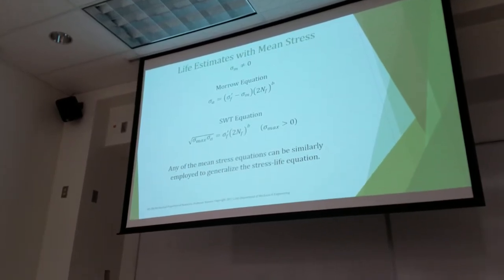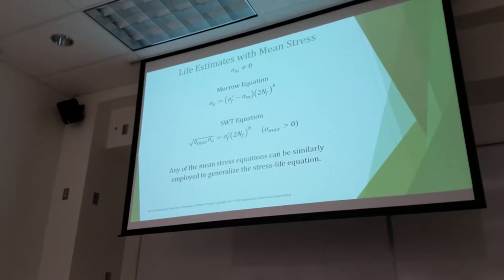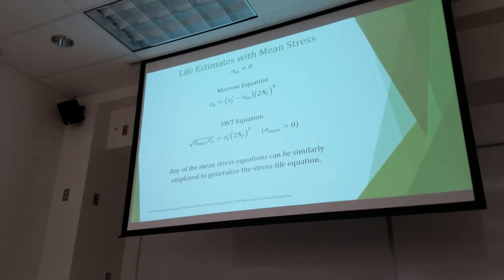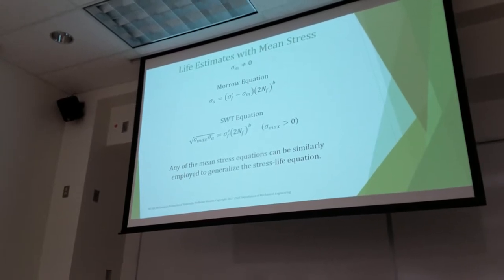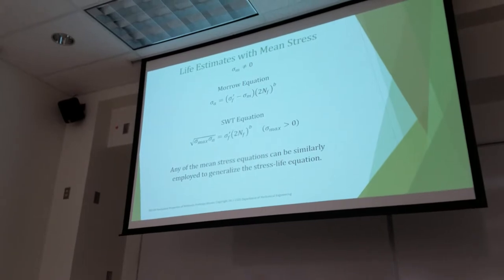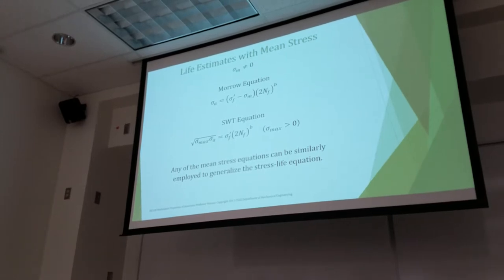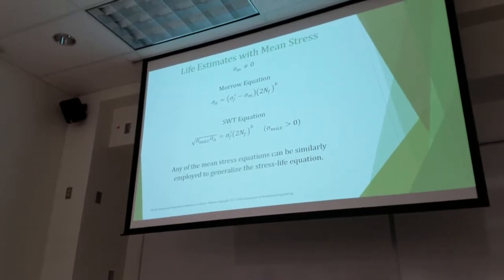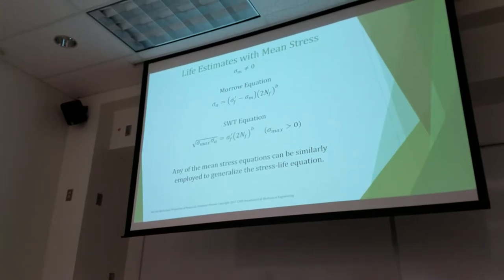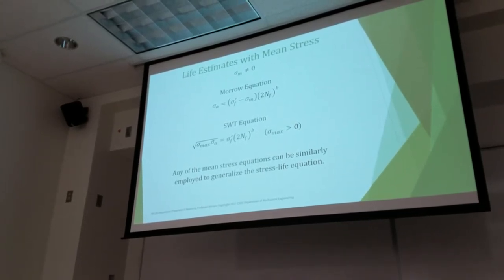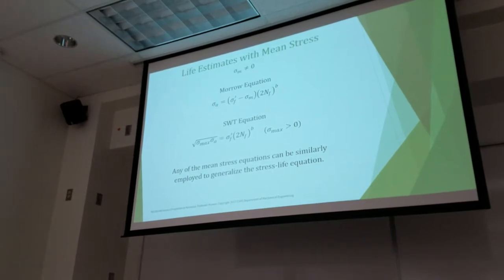Here's the Morrow equation. Here's the SWT equation — it just substitutes back in for Sigma AR. Any of these stress equations can be similarly employed to generalize the stress life equation. So those are your generalized equations you can go straight to. Now make sure you know at what level you're using these equations — either use the generalized equation in one step, or use the design equations from the normalized amplitude-mean diagram in one step, then the stress life equations in the second step. But don't do both.